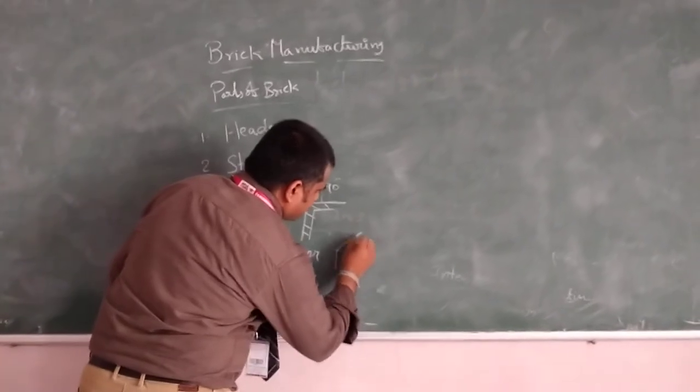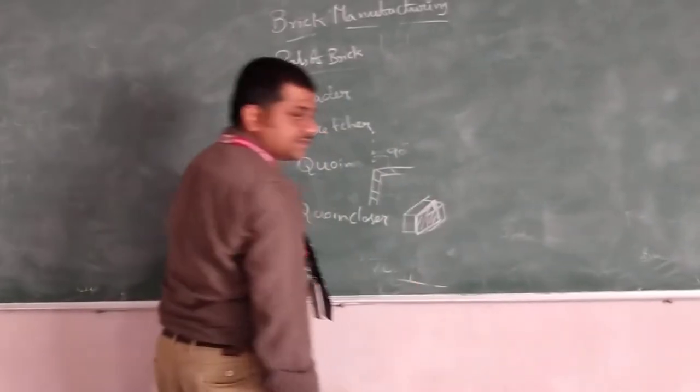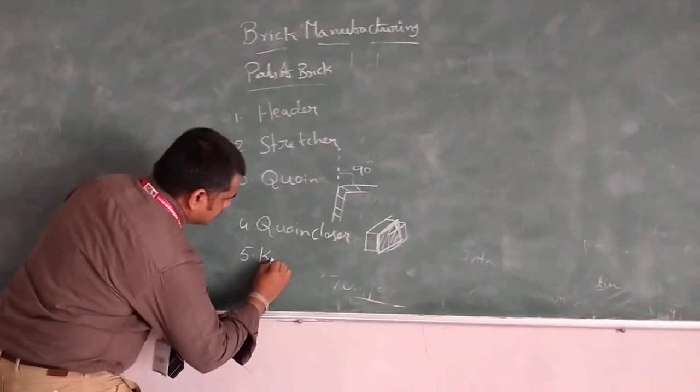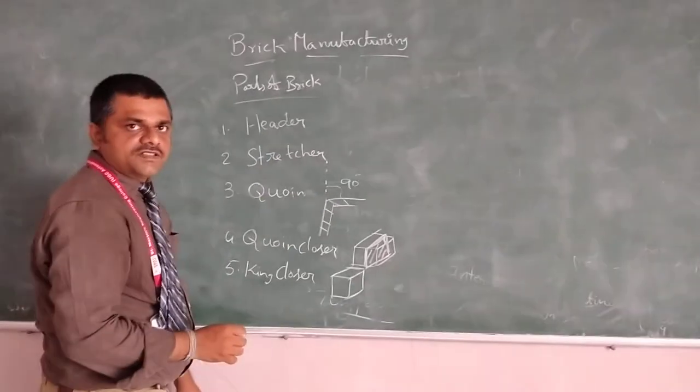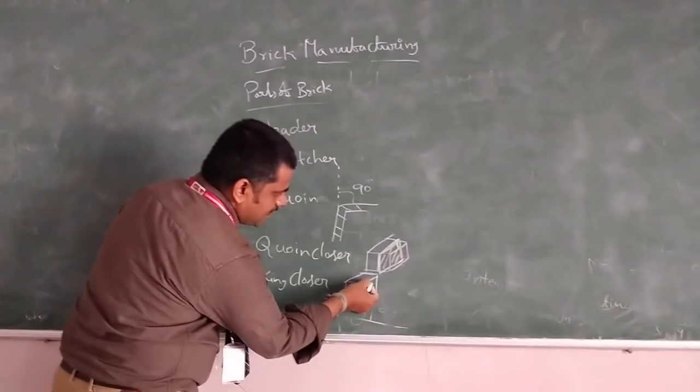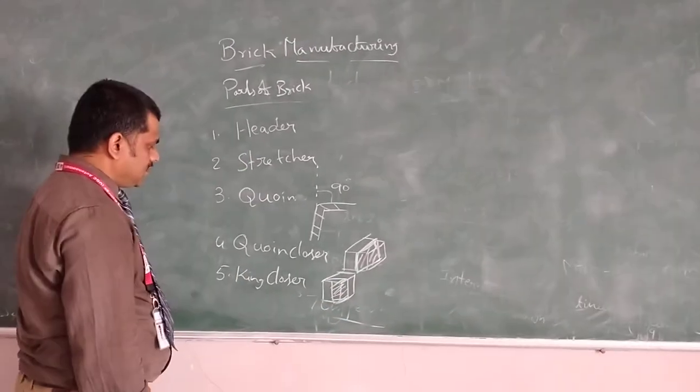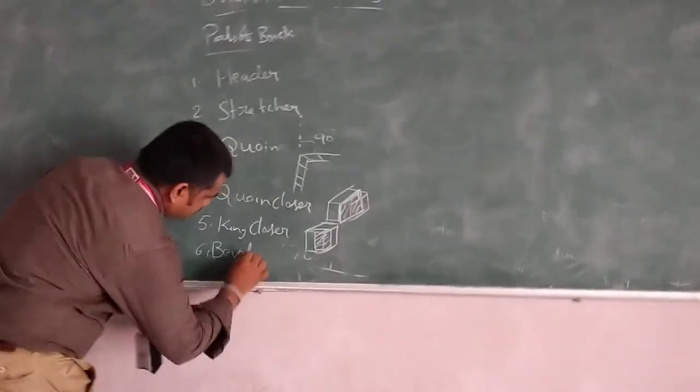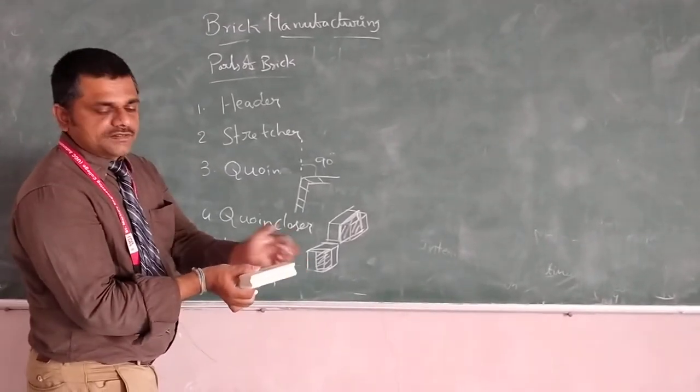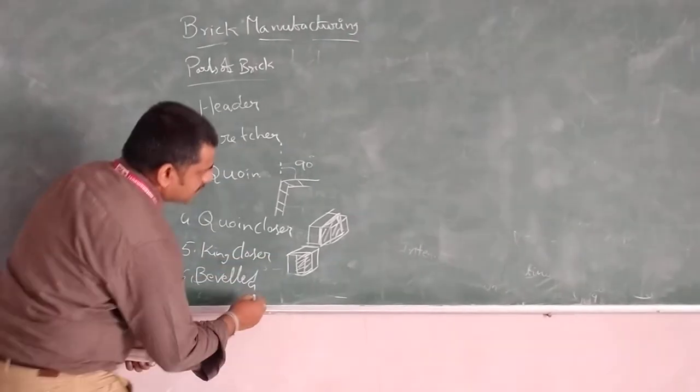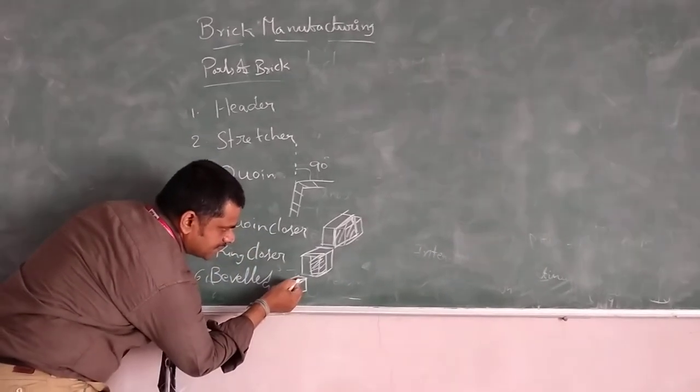Next is queen closer. Queen closer is nothing but the center portion of the stretcher. Center portion of the stretcher, and remove this part. Here the only difference is the header center part versus the corner part. This is the header center portion, corner part.